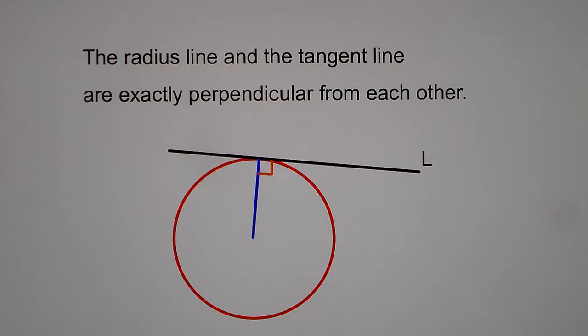So the radius of the line and the tangent line are exactly perpendicular from each other. If it's touching at one point, the center of the circle to that one point is the radius, and it makes a 90 degree angle. So it needs to be a 90 degree angle to help prove that this line L is tangent to this circle.